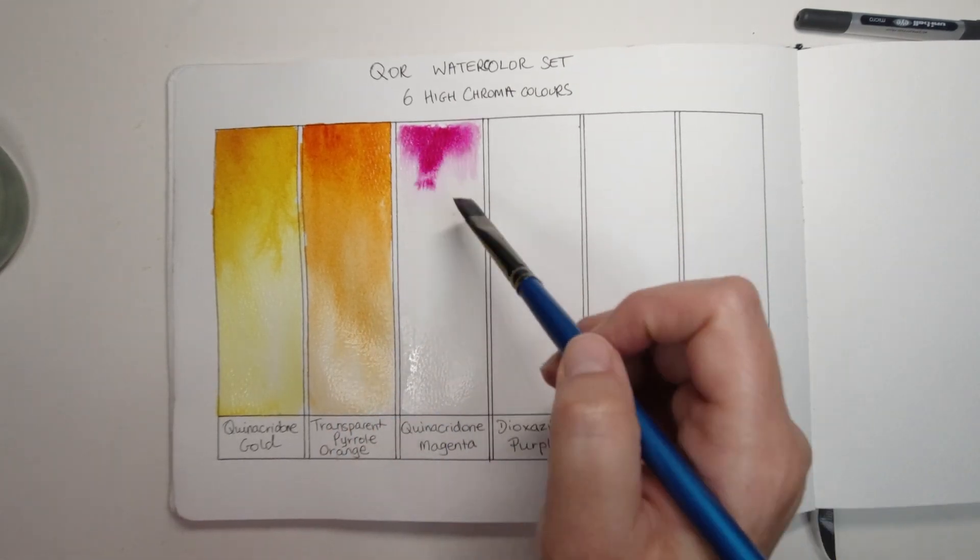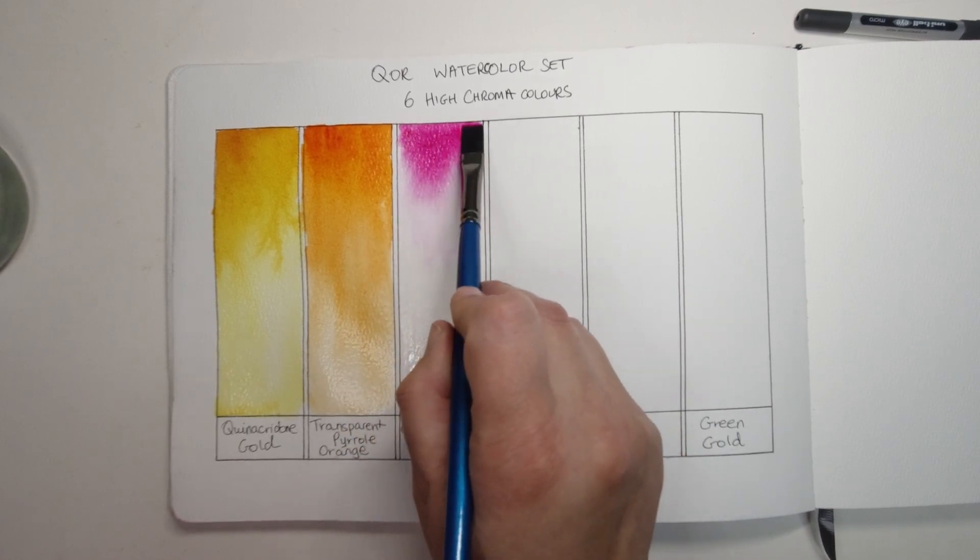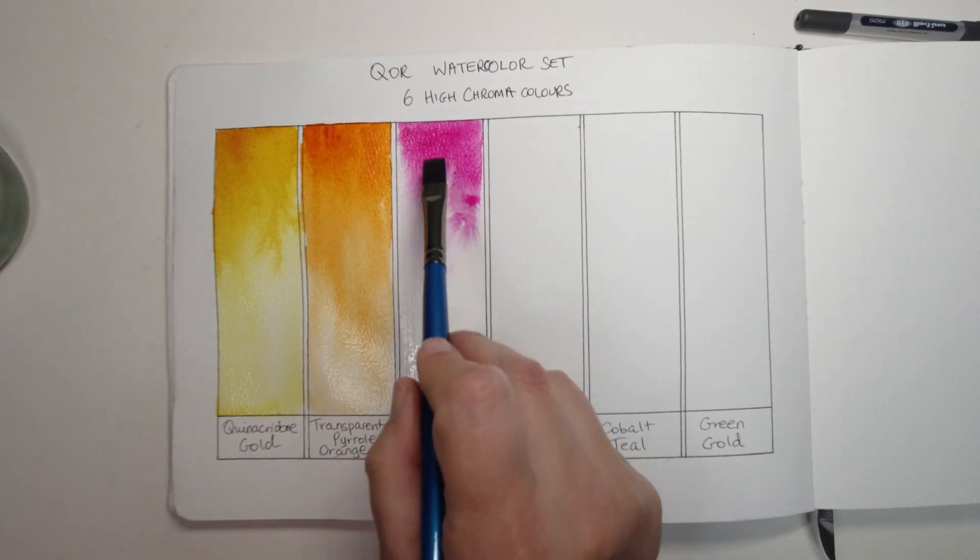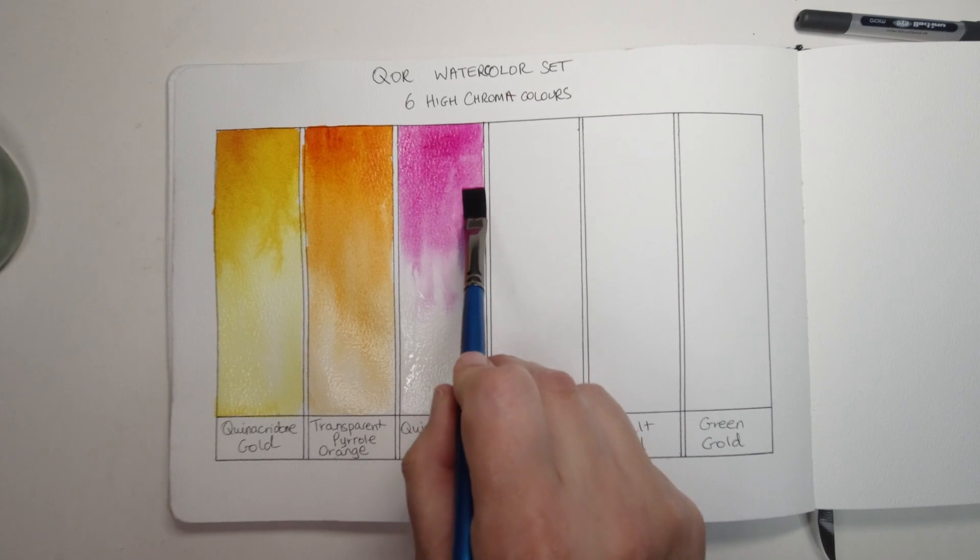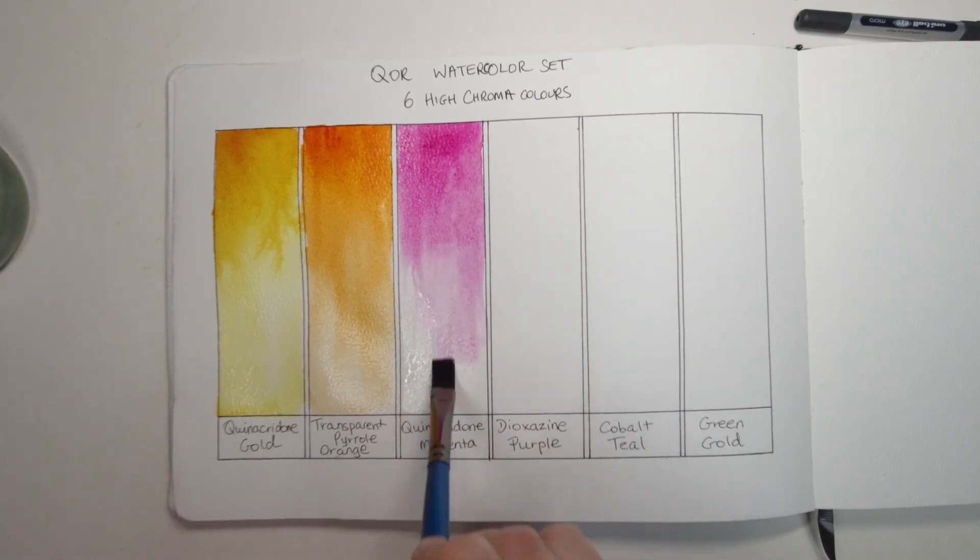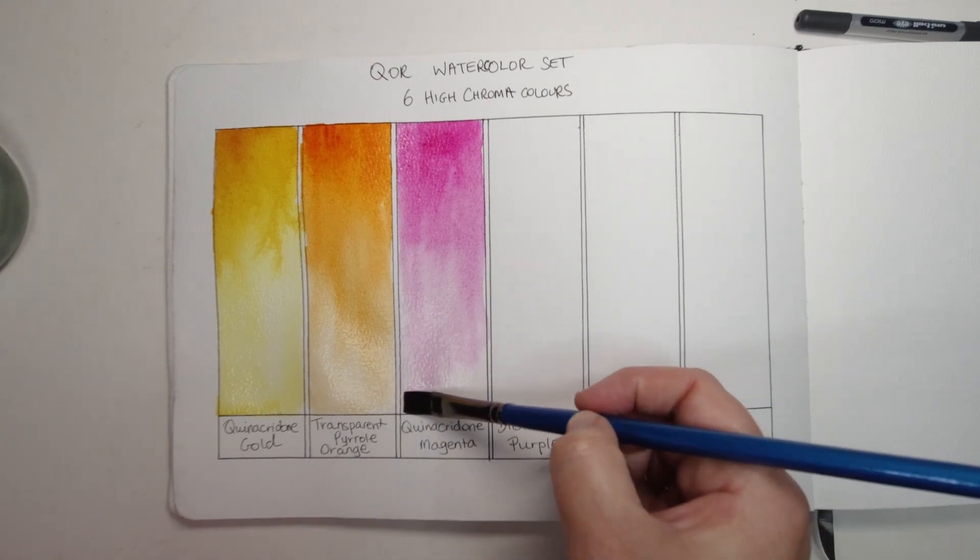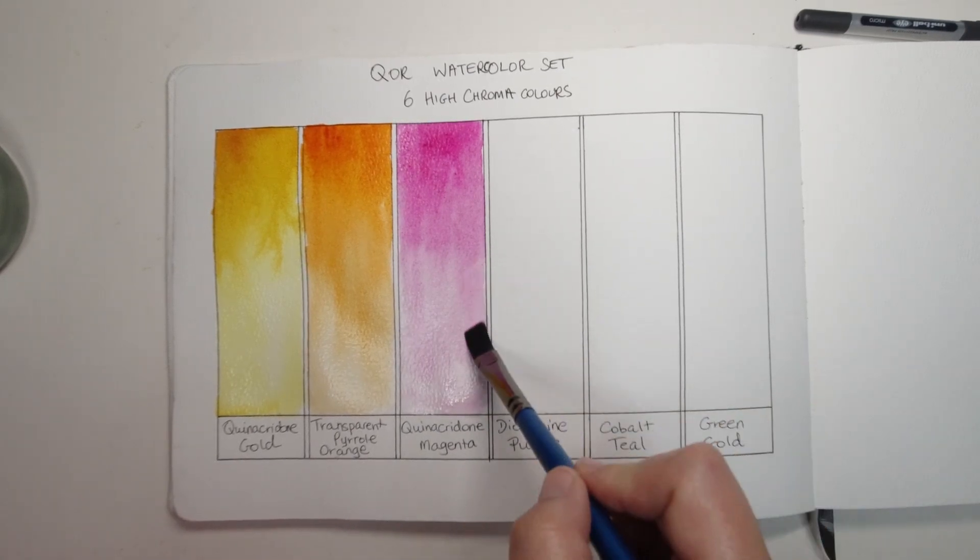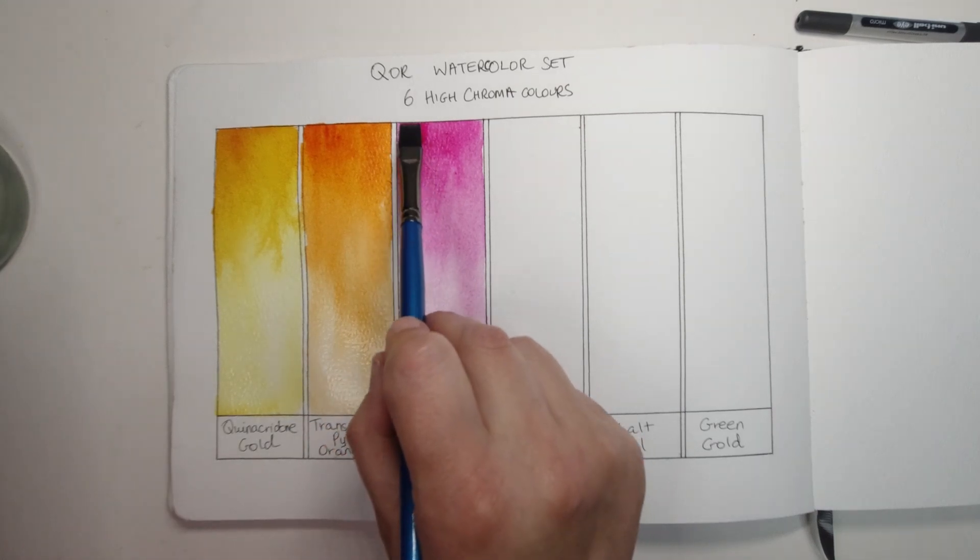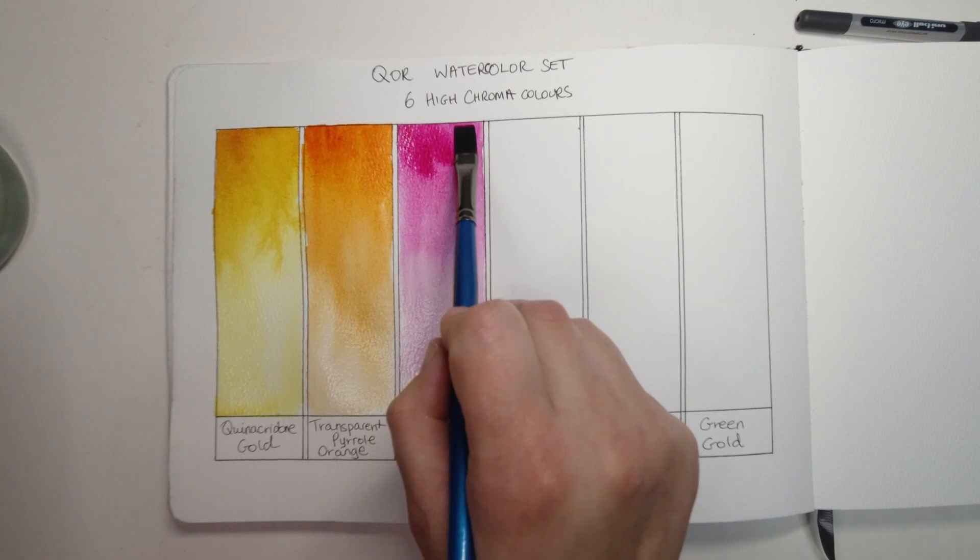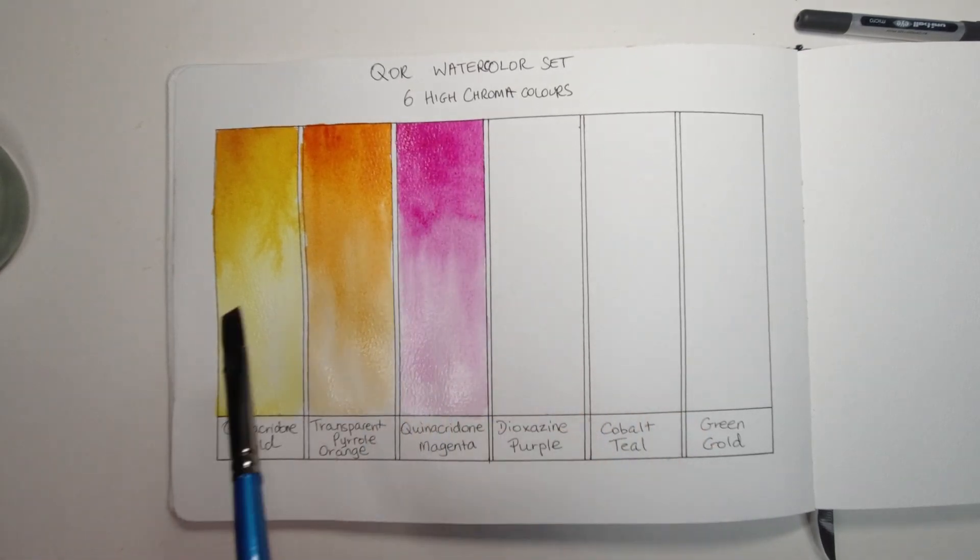And our next one is the very very vibrant quinacridone magenta. I really love this color, it's so pink and beautiful. Some magentas I find a little bit leaning on the purple side and kind of dull, but this one's really really vibrant and I love it a lot. It's made up of the pigment PR122, it's a series 3 and it has excellent light fastness which is great for pink colors which are quite often very very fugitive. It's transparent and staining. And I'm just adding a bit more to the top there again just so we can see that beautiful color coming through. Boy it's vibrant.